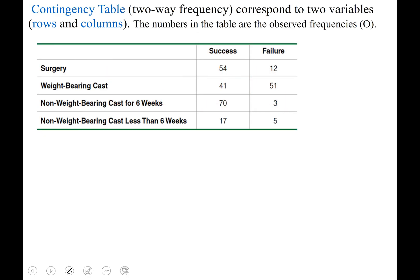A contingency table has a two-way frequency, so it has two variables, rows and columns, and the numbers in the table are the observed frequencies.